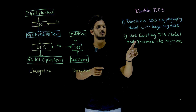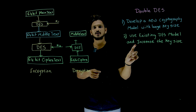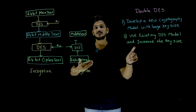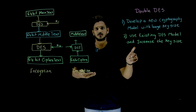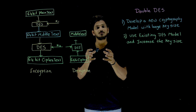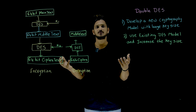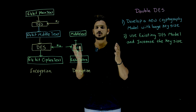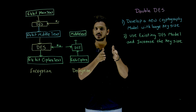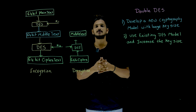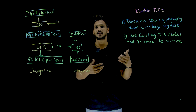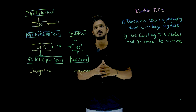In double DES, they are going to use the existing DES and they are trying to increase the size of the key. Why? Because DES is already implemented in many systems. Why should we change all those things? Why not go with the same DES model and try to increase the key? That is their intention, and that's why they implemented double DES.